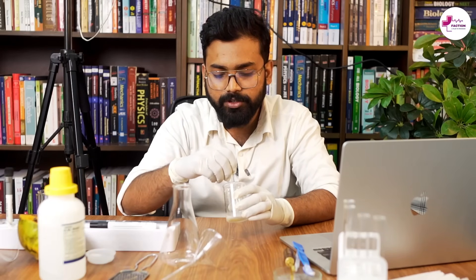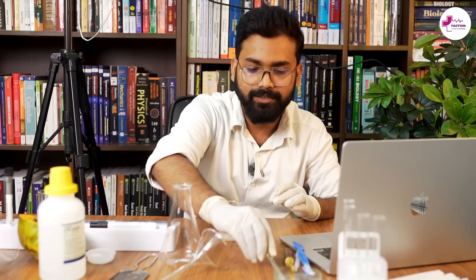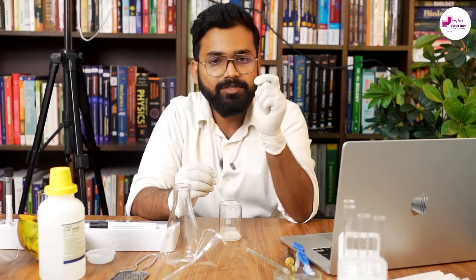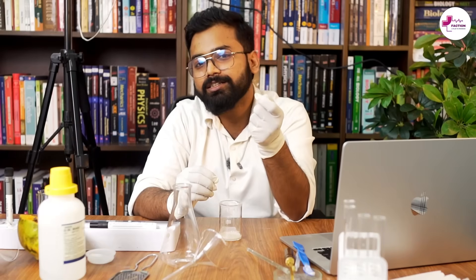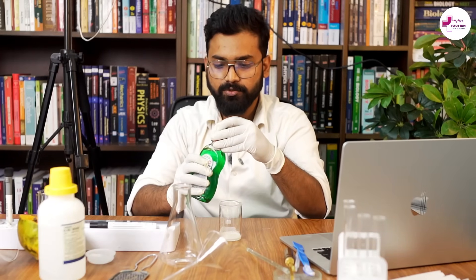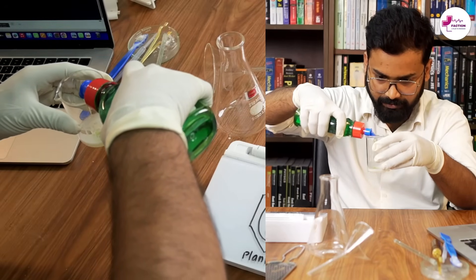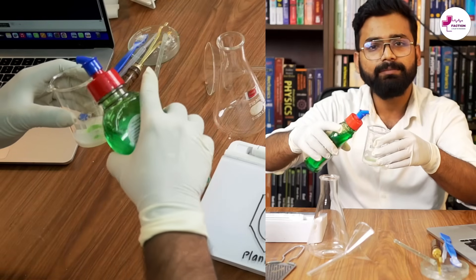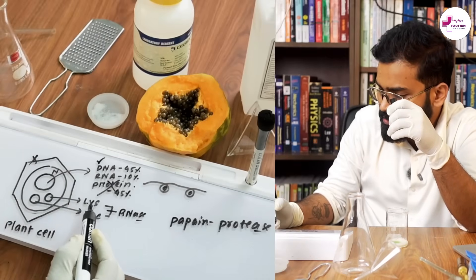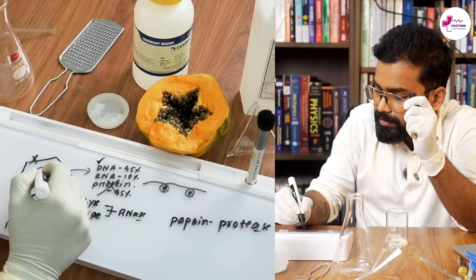By this point the cell wall should be absent. Our next task is to digest the cell membrane, which is made of a lipid bilayer with some protein. In lab conditions we use lipase, but instead I am using a dish washing soap as a detergent. Adding a few drops will digest the cell membrane, nuclear membrane, lysosome membrane, and vacuole membrane — all membranes will be disrupted.